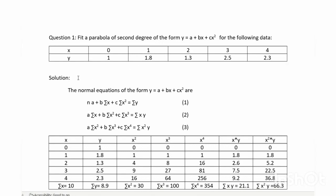Now let us see the solution for this. We know that the normal equations of the form y equal to a plus bx plus cx squared are as follows. Na plus b summation x plus c summation x squared equal to summation y, which can be taken as equation 1.